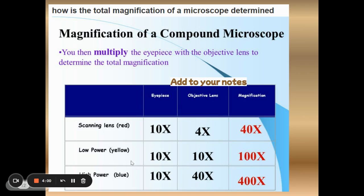The low power, 10x eyepiece multiplied by 10x of the objective lens gives you 100 times magnification. And then for the high power we will take the 10x from the eyepiece, multiply it by the 40x of the high power. And that gives us 400 times total magnification. So we'll be looking at the specimen at 400 times larger than what it is.